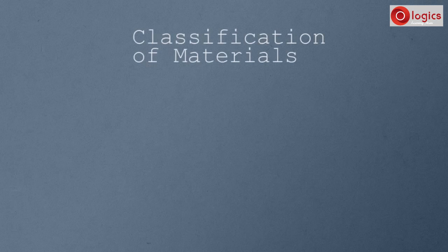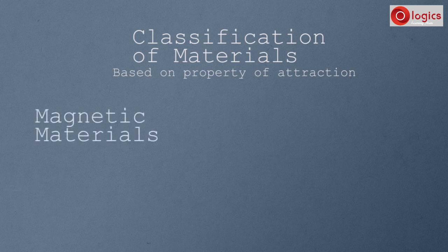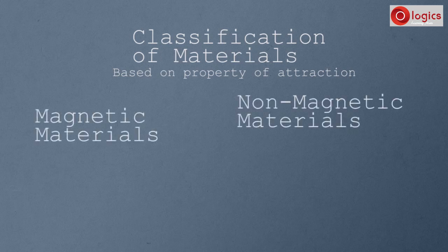Classification of materials. Let's see how materials are classified. Based on the property of attraction, materials are divided into two types: magnetic materials and non-magnetic materials.